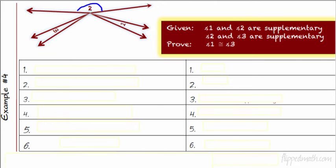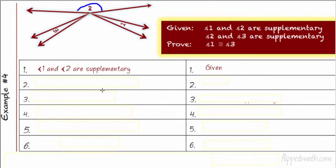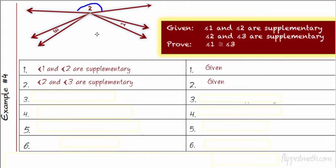I said you would do three proofs, and I lied — we actually have four. Sorry. Hopefully that one makes lots of sense. Here's another one. It looks kind of like a butterfly. We're looking at angles 1 and 2 being supplementary — angle 2 is this huge angle that's almost 180 degrees, and angle 1 is just that little bit more. It also says 2 and 3 are supplementary, and they want us to prove that angle 1 is congruent to angle 3. If you think you can do it, pause the video; if not, follow along.